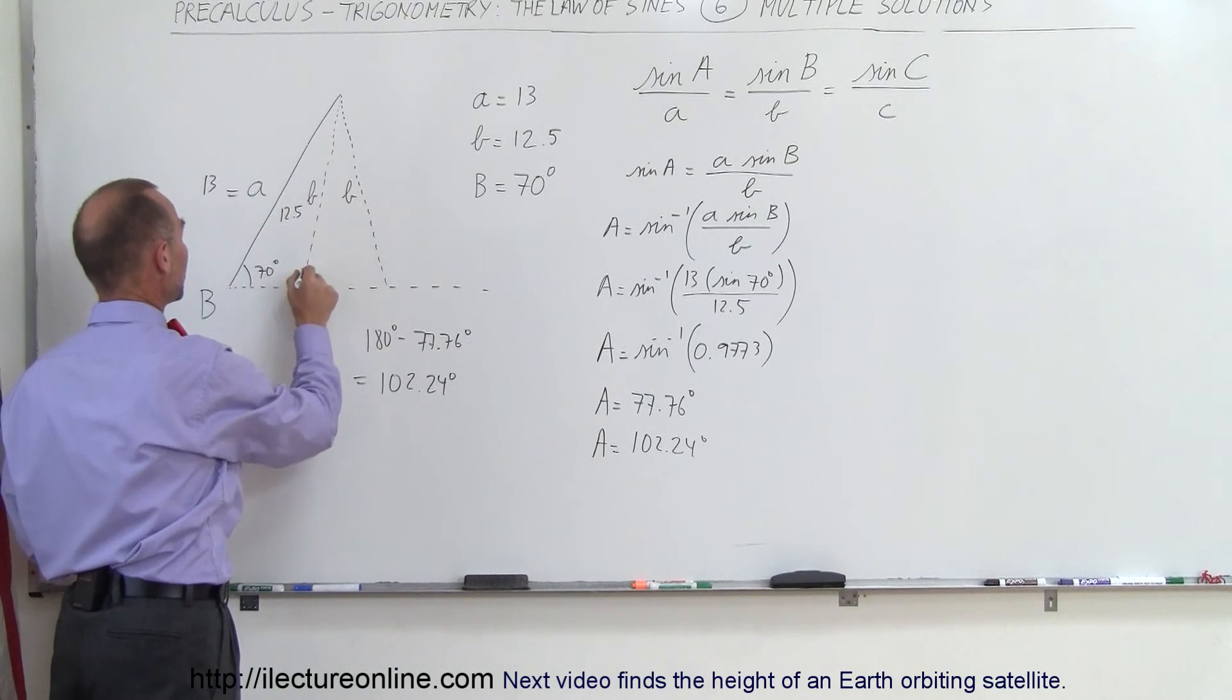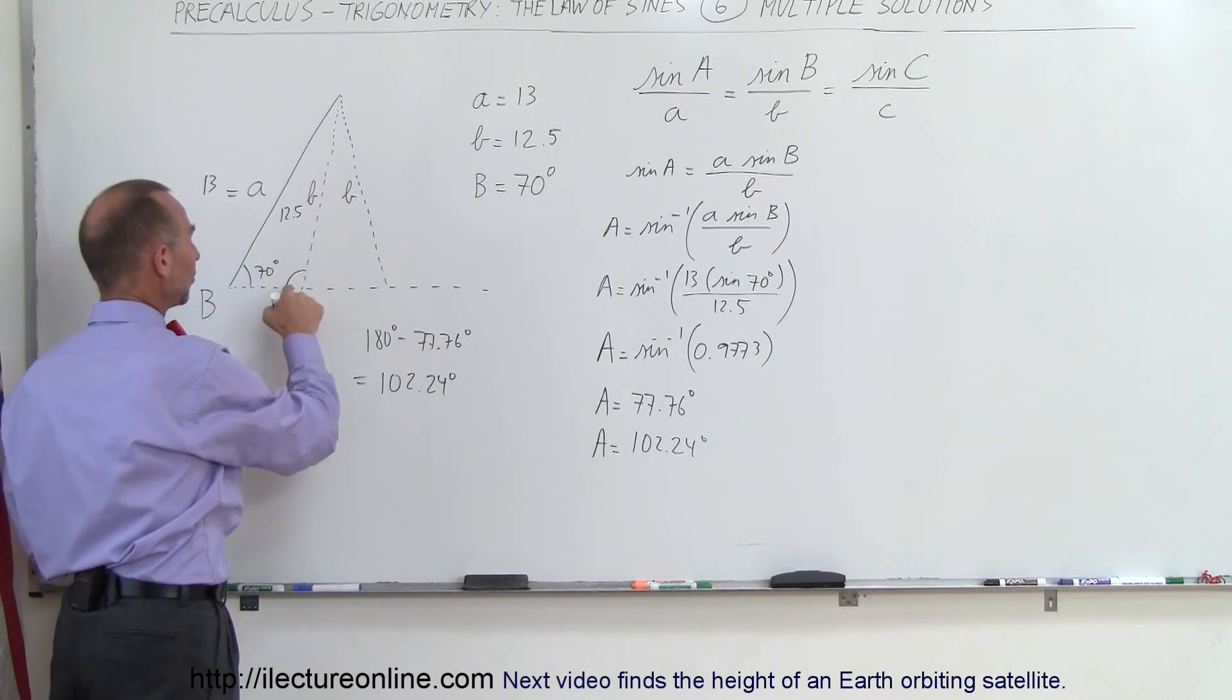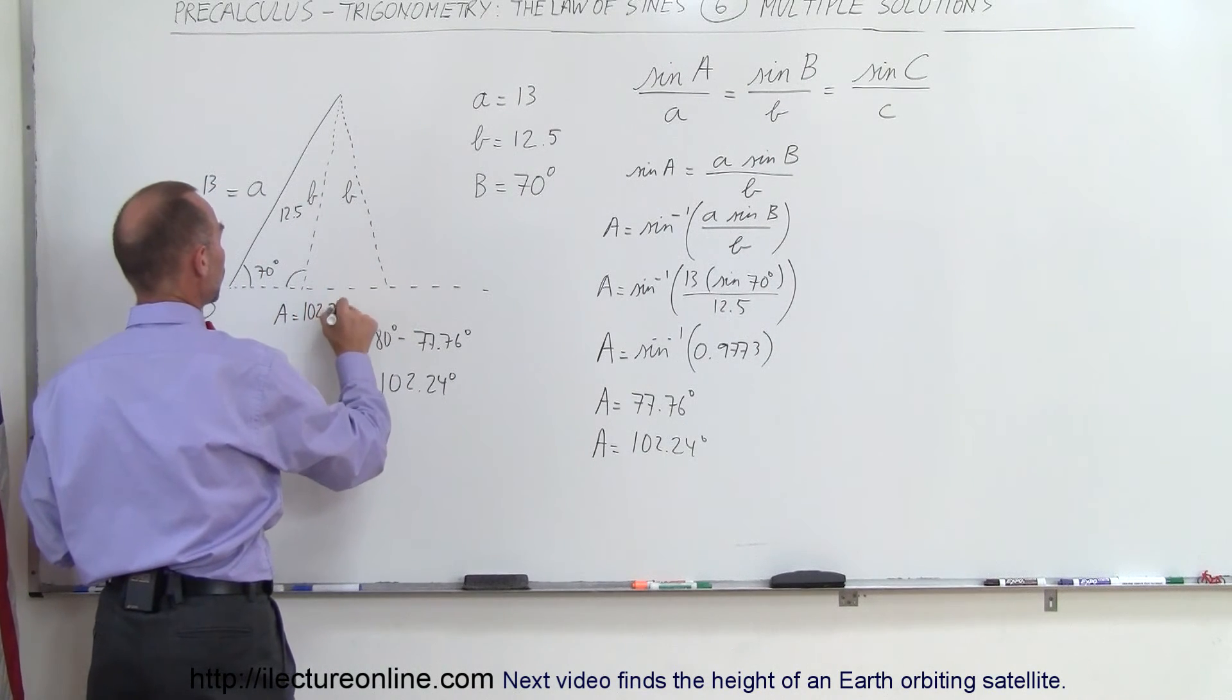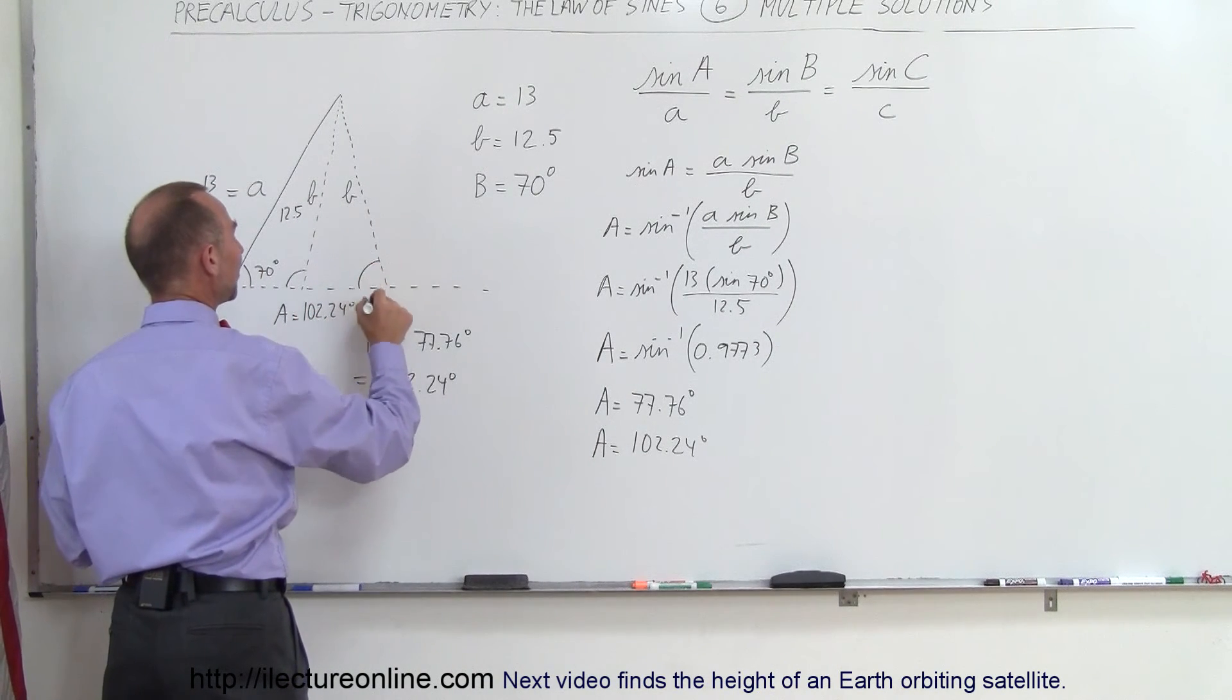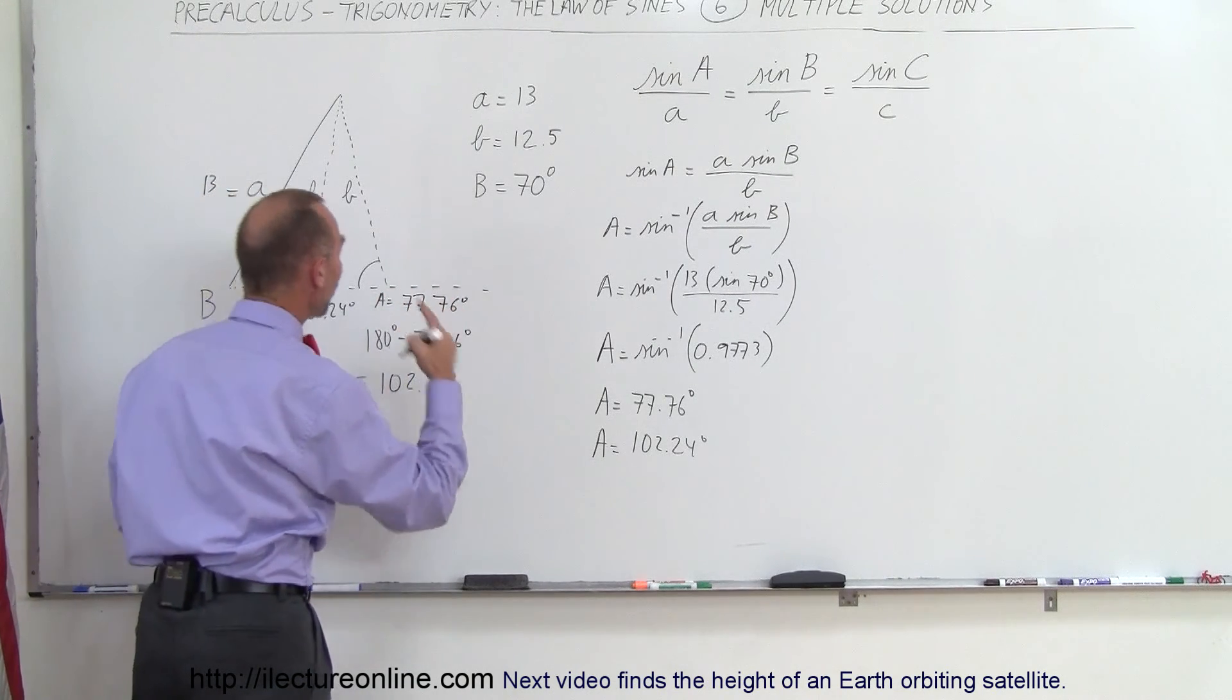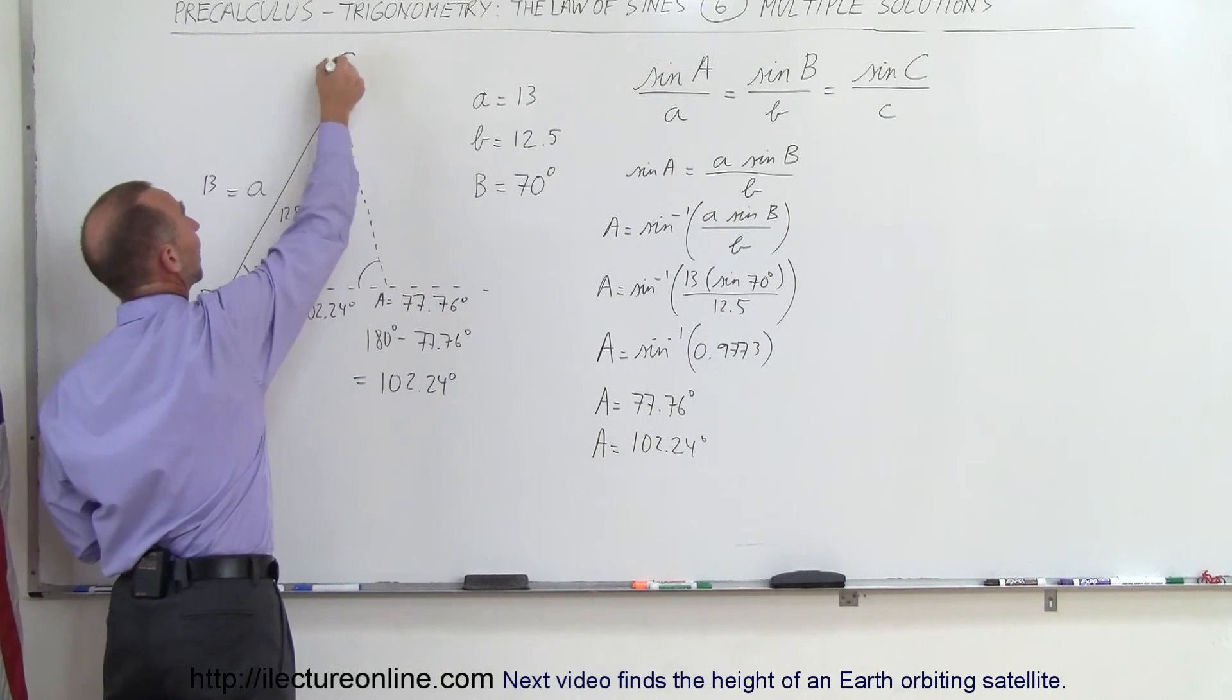If I take this angle right here, angle A would be 102.24 degrees. If I take this as angle A, I would get 77.76 degrees, which would give me a different angle for angle C, depending upon which triangle I'm using.